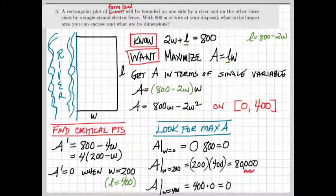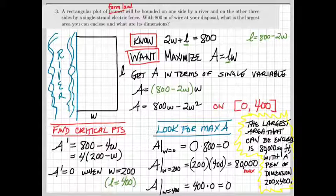Clearly, 80,000 meters squared is the maximum of these three numbers. And our conclusion will be that the largest area that can be enclosed is 80,000 square meters, with a pen of dimension 200 by 400.